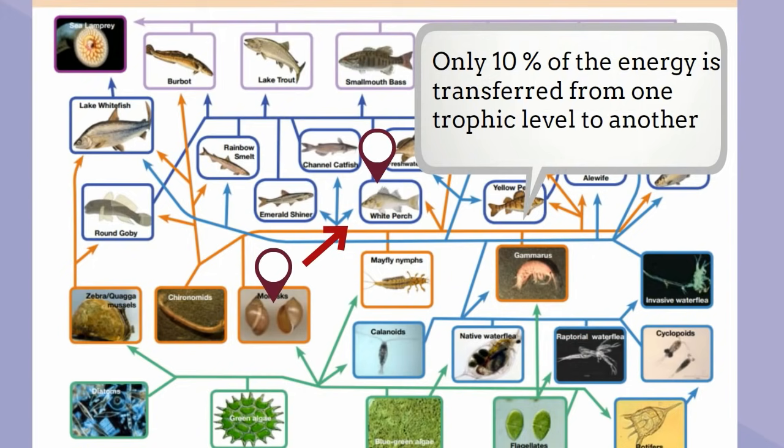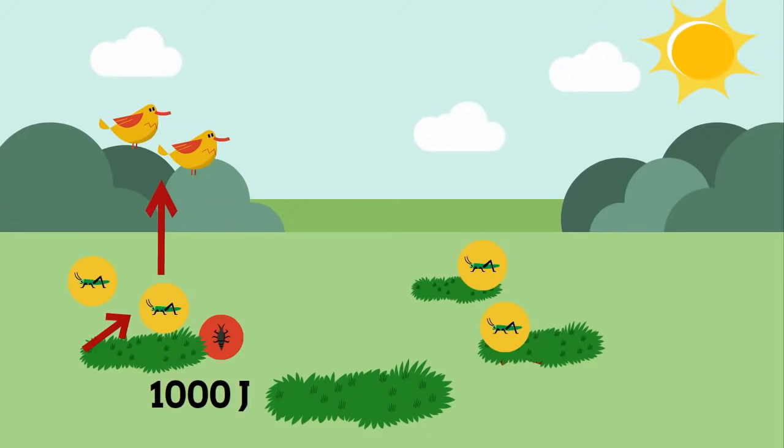This is known as the 10% rule. For example, if you start with a thousand joules of grass and a grasshopper eats the plant, only 10 joules will be transferred, and a bird eats the insect, only one joule will be transferred. Where does this energy go?